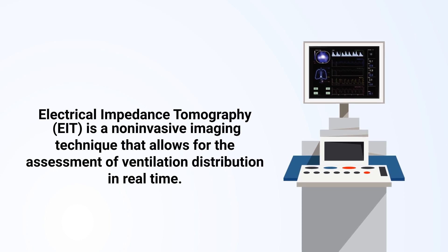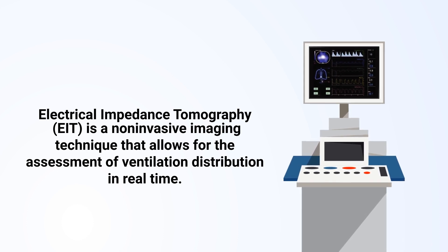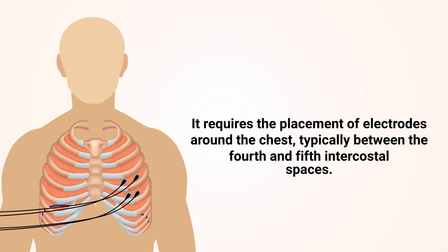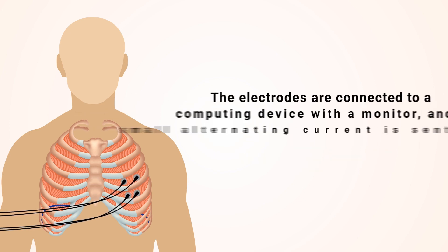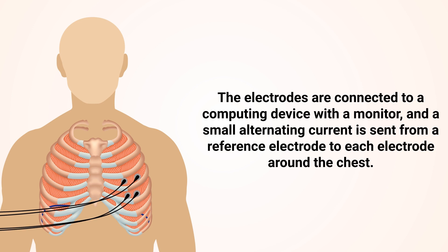It requires the placement of electrodes around the chest, typically between the fourth and fifth intercostal spaces. The electrodes are connected to a computing device with a monitor, and a small alternating current is sent from a reference electrode to each electrode around the chest.